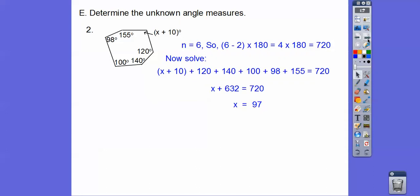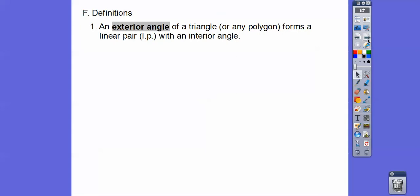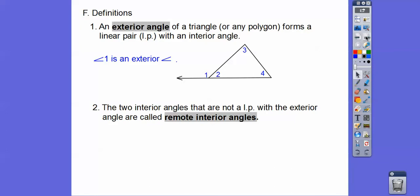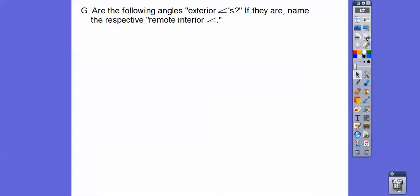An exterior angle of a triangle or any polygon forms a linear pair, a straight line with an interior angle. Can you see this outside angle and this inside angle make up this straight line? Angle 1 is an exterior angle. The other two angles are called the remote interior angles. These angles that don't form the linear pair are called the remote interior angles with respect to this exterior angle. Angles 3 and 4 are remote interior angles.